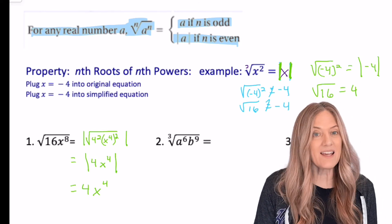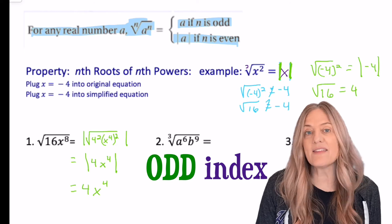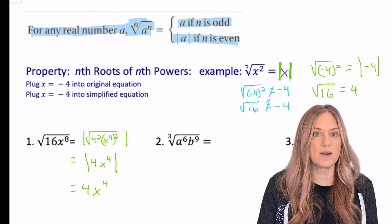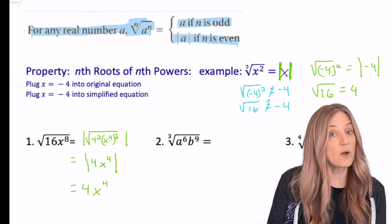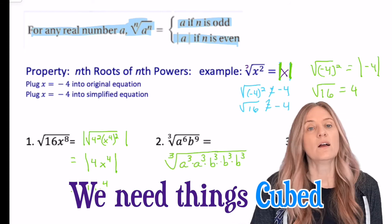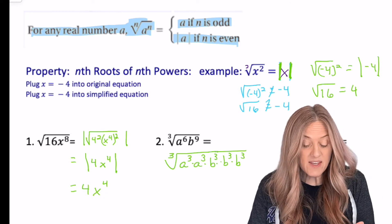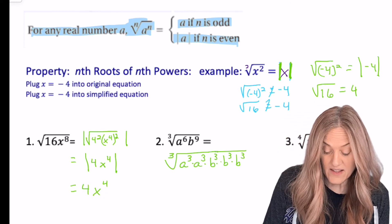Looking at number two, it's an odd index. Do I need the absolute value bars? No. I cannot worry about that for this one. So let's just go ahead and simplify this. So I broke this one down just a little bit different for you to consider it. Broke everything into cubes.